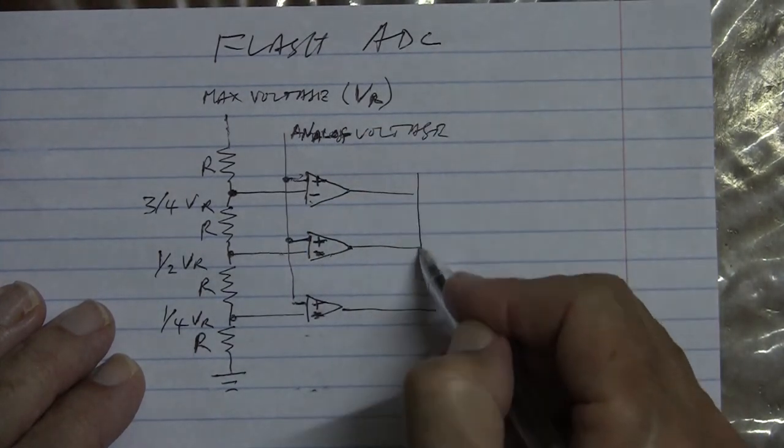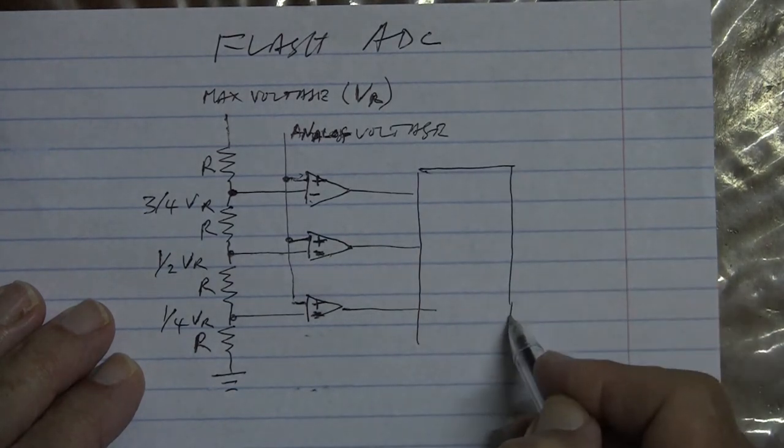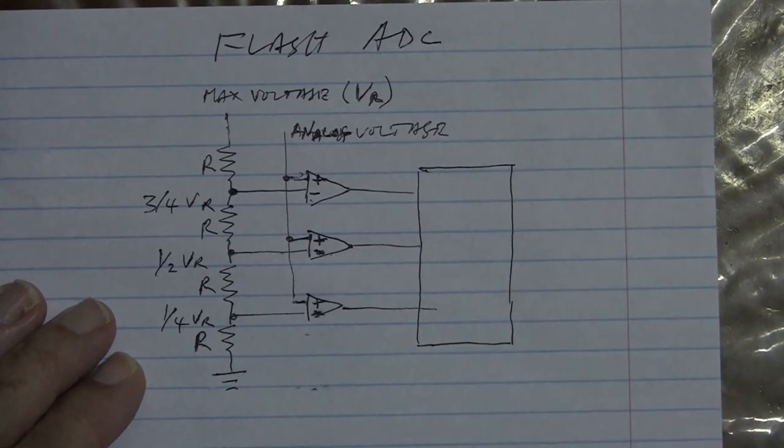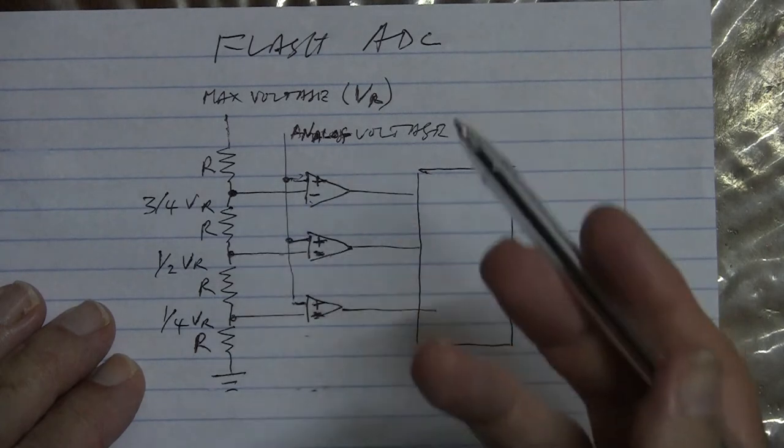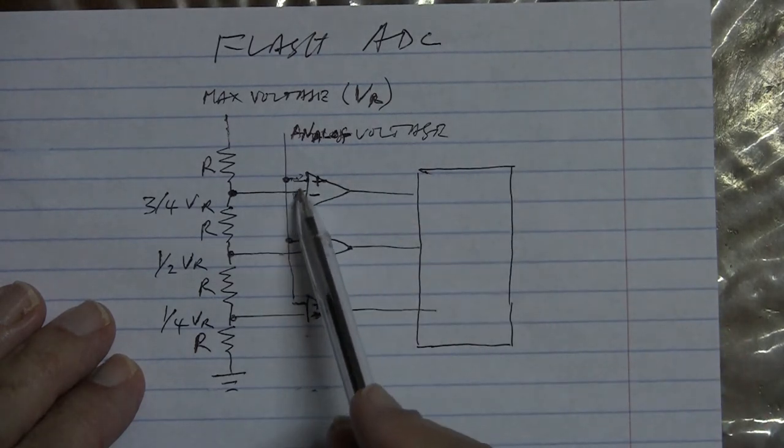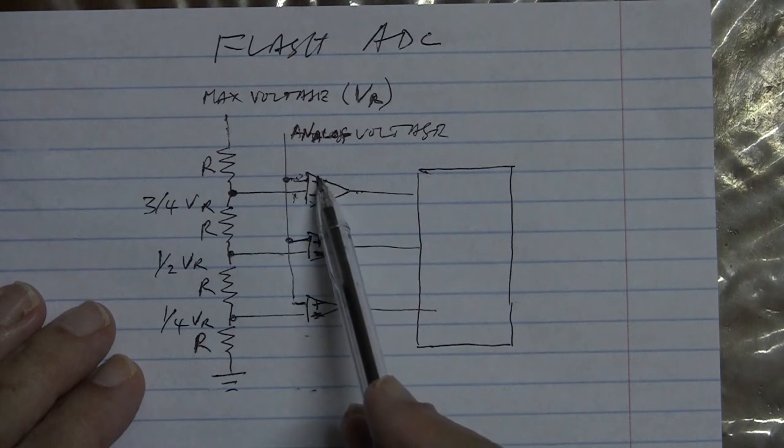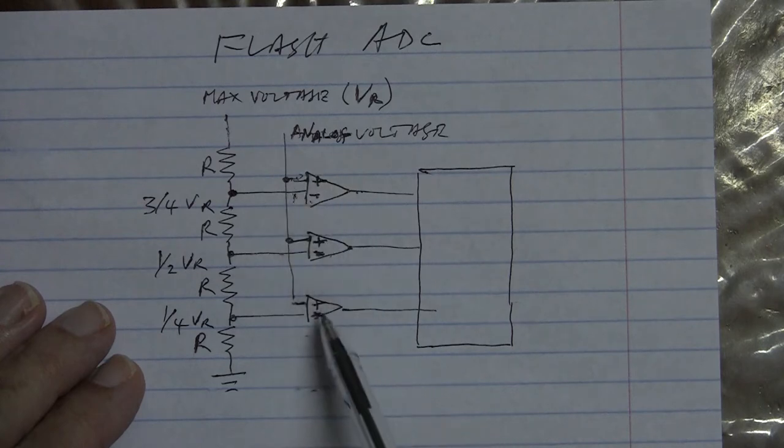Alright so the fixed voltages are going to determine when the operational amplifier switch on. Because we can have variable voltages are going to be a zero unless the plus is actually greater than the minus. Okay so that's the understanding of these comparators.